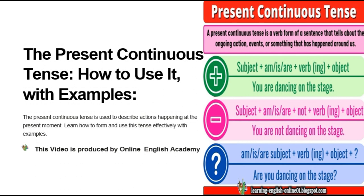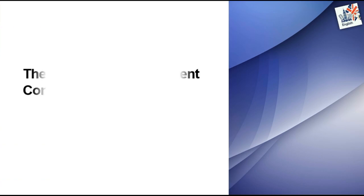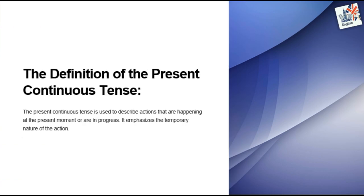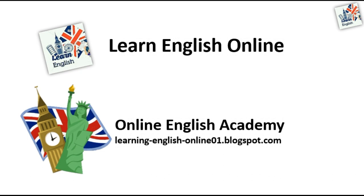The present continuous tense — how to use it, with examples. The present continuous tense is used to describe actions that are happening at the present moment or are in progress. It emphasizes the temporary nature of the action. This video is produced by Online English Academy.